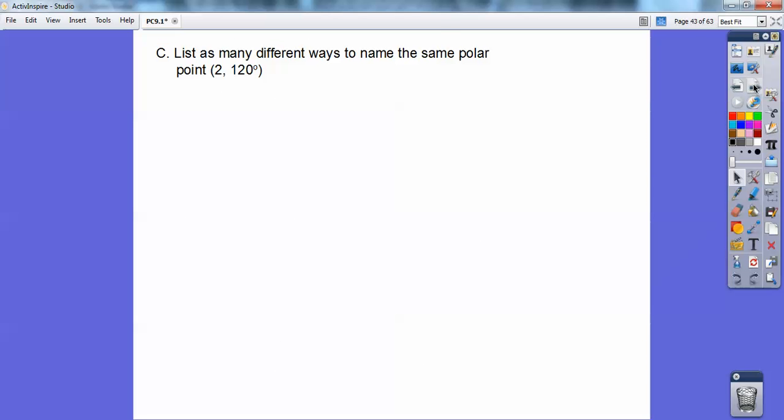So list as many different ways to name the angle 2 comma 120. Well, there's 2 comma 120 right there. So here's one, 2 comma negative 240. Negative 240 would be clockwise right there. There's all kinds. Here's a bunch more, you guys. That's 2 comma 480,